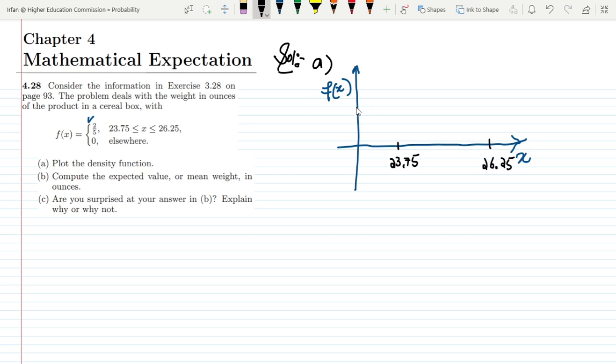And this value is constant which is 2/5. If this is 2/5, the value of it will be constant in between these two ranges. And it is the value we have here. So this is the plot of the density function which we have here. This is the density function.